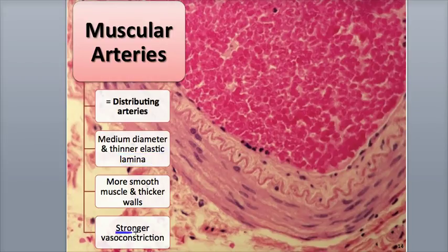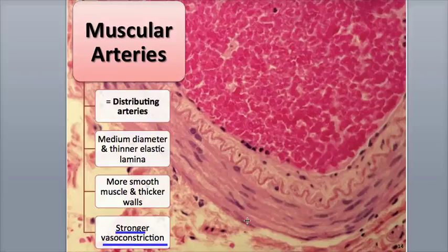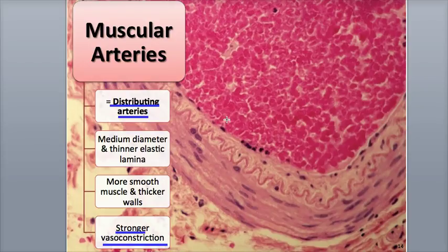The abundance of smooth muscle gives muscular arteries better control of blood flow, permitting more vasoconstriction and vasodilation. The smooth muscle can stay contracted, creating a state of vascular tone that helps maintain blood flow and vessel pressure. Examples include the brachial artery in the upper arm and the radial artery in the forearm. They are also called distributing arteries because they branch extensively, delivering blood to body organs and peripheral limbs.